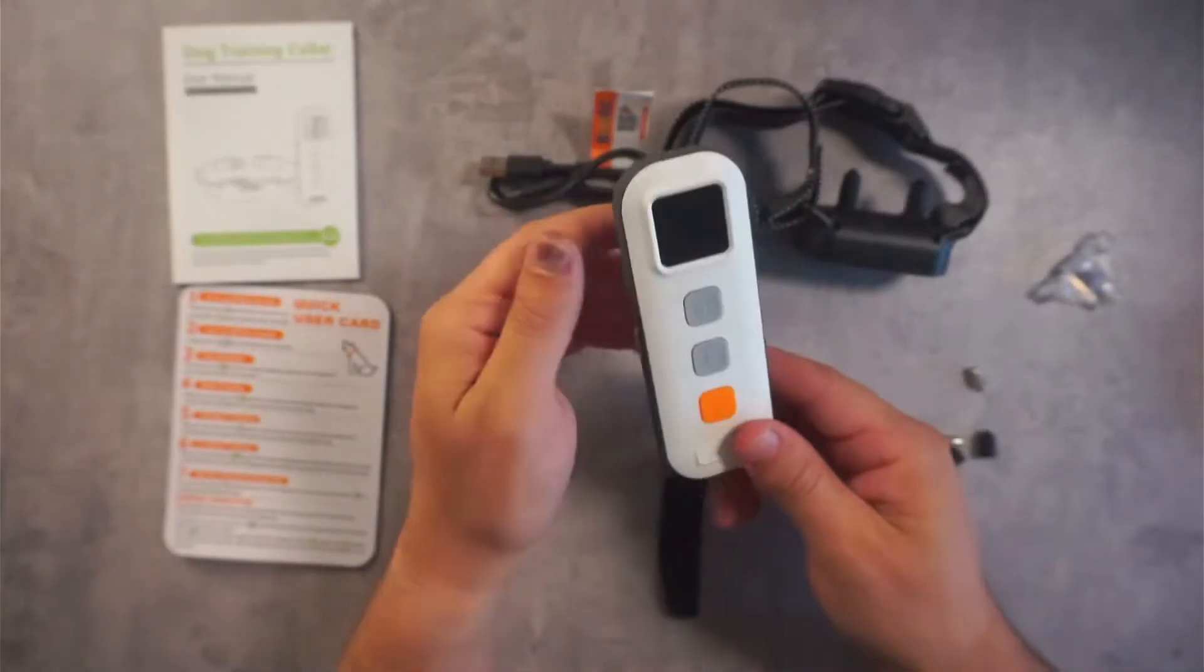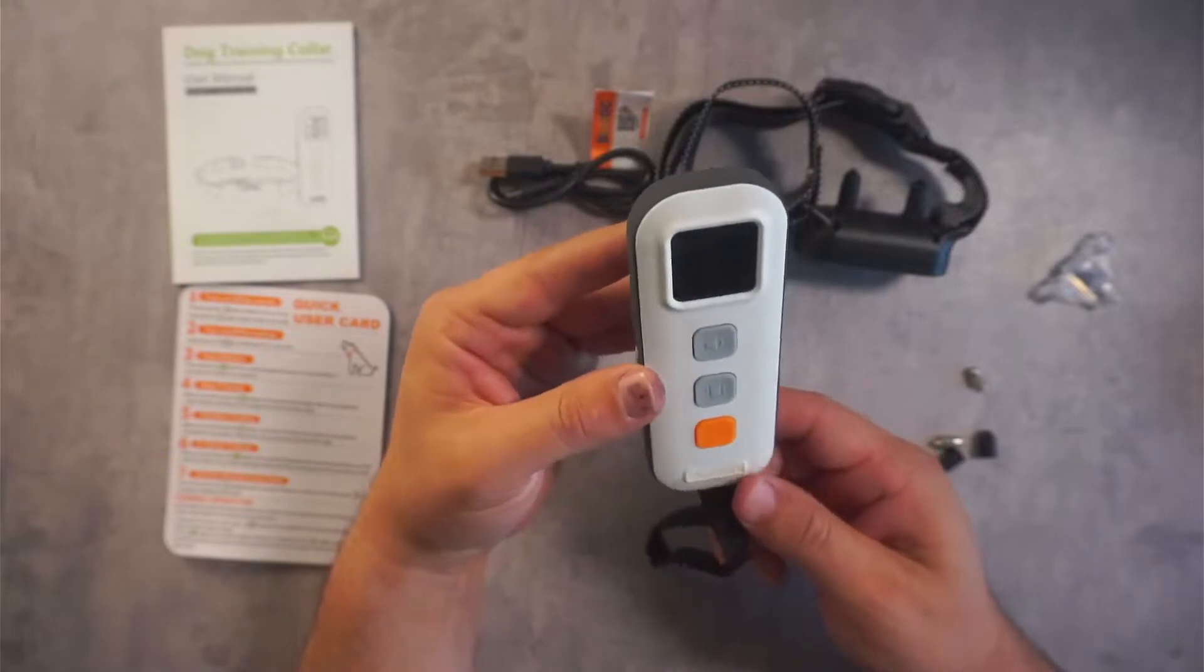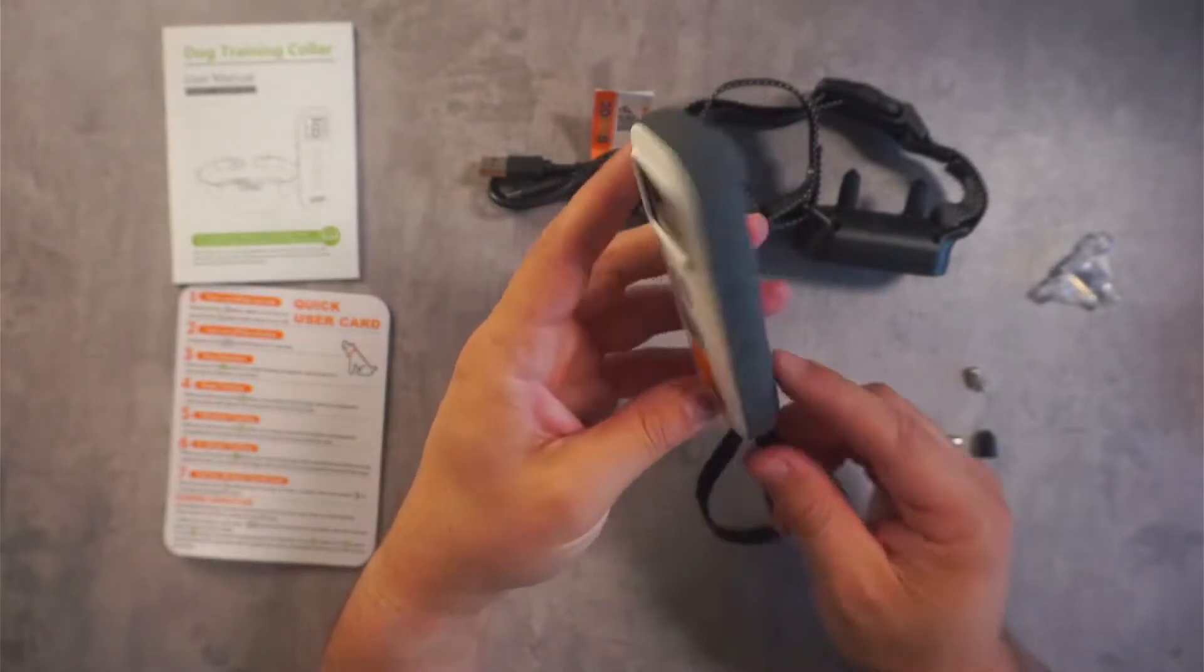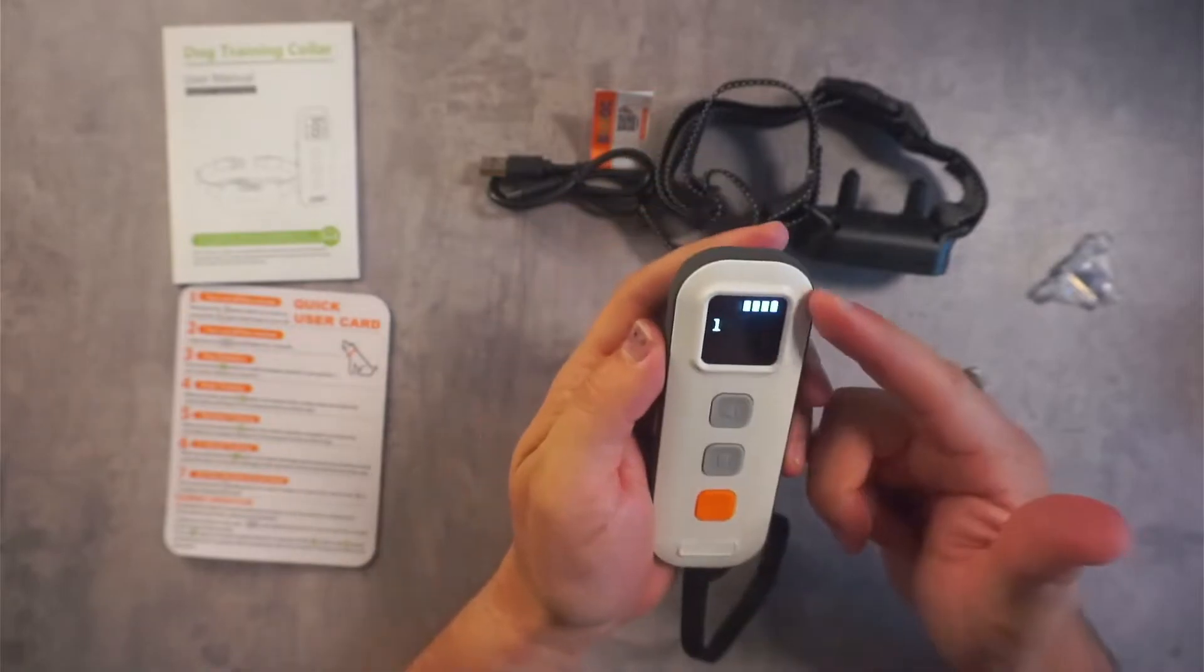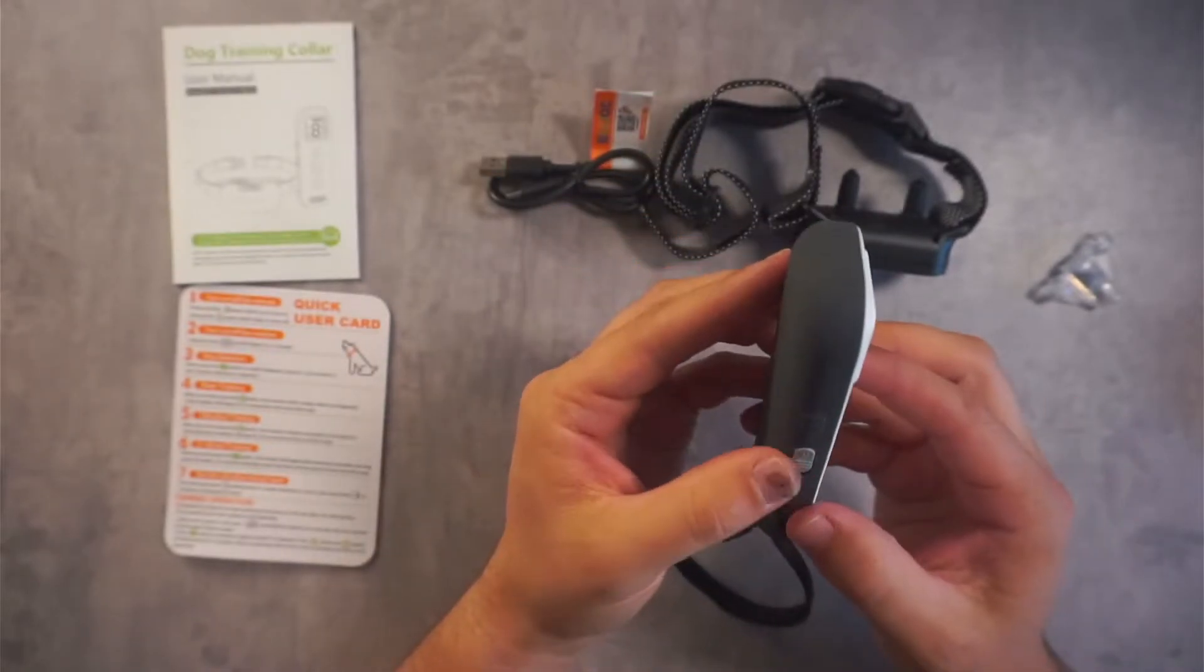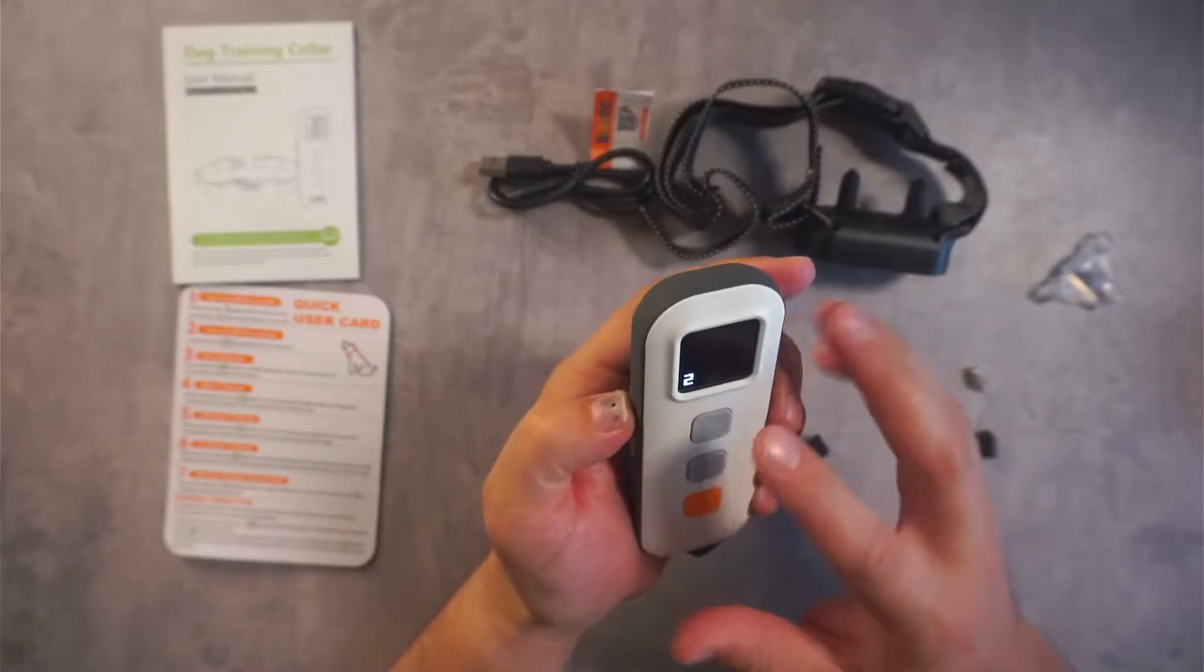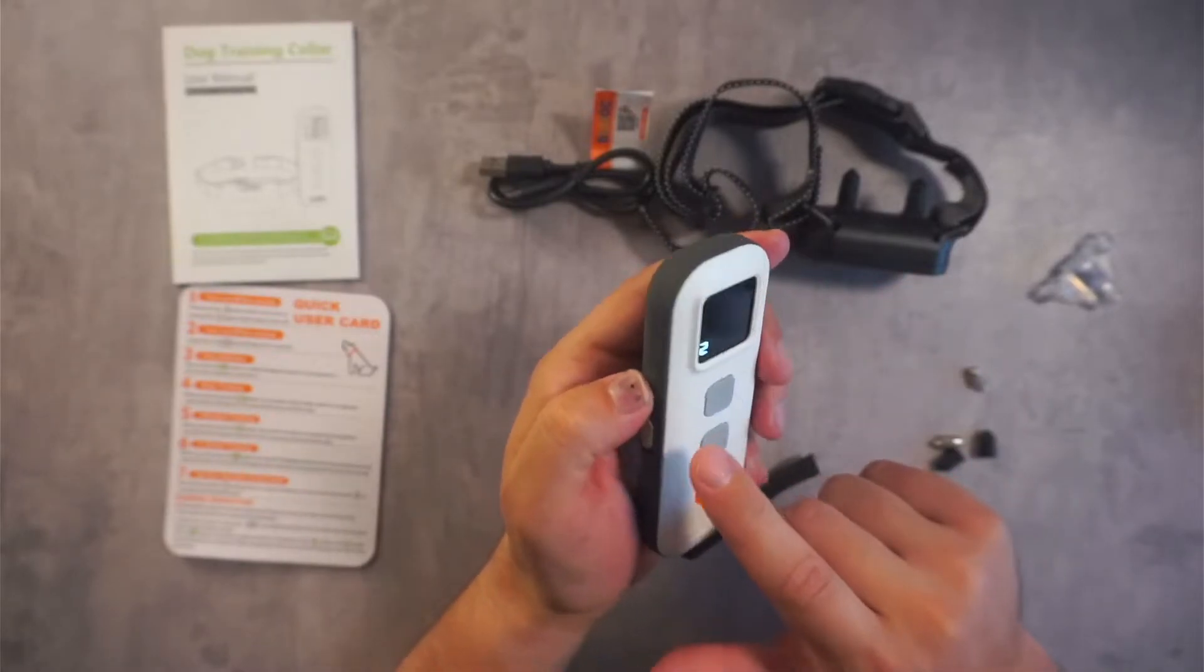And then you have your remote here. The remote, I believe, lasts for 90 days on the batteries inside. Basic functions, you turn it on right here. You have your battery life right here. It does have two channels. So that's channel one. And then channel two is you rotate it with the power button.